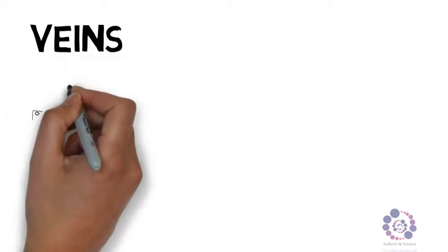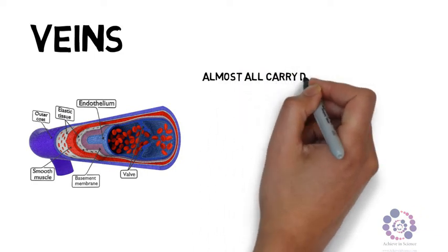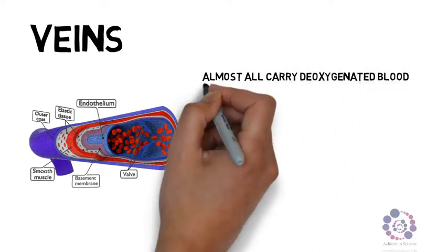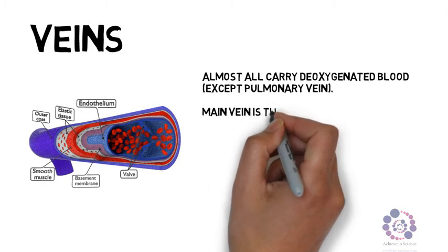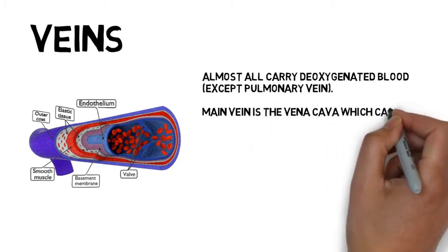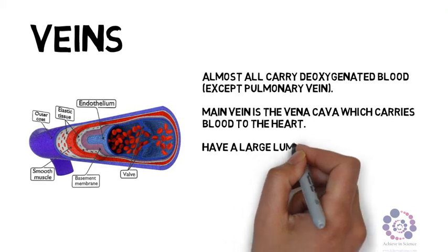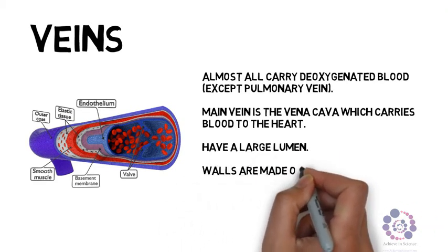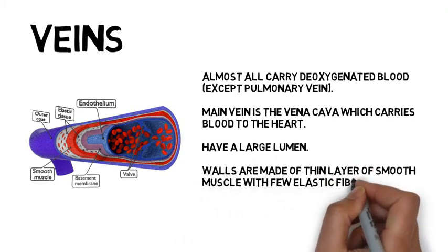Veins, on the other hand, carry blood into the heart. They carry deoxygenated blood except for the pulmonary vein which links the lungs with the heart. The lumen is larger which is again the center of the blood vessel. They have less elastic fibers and they have smooth muscle. This is because the blood pressure is lower within a vein than an artery.